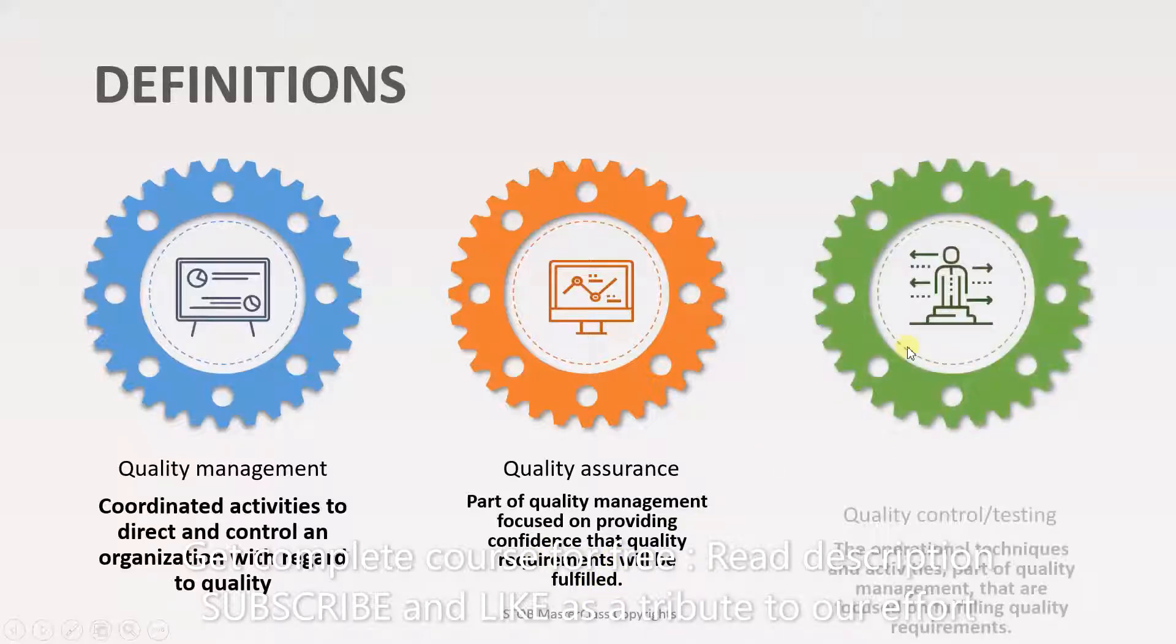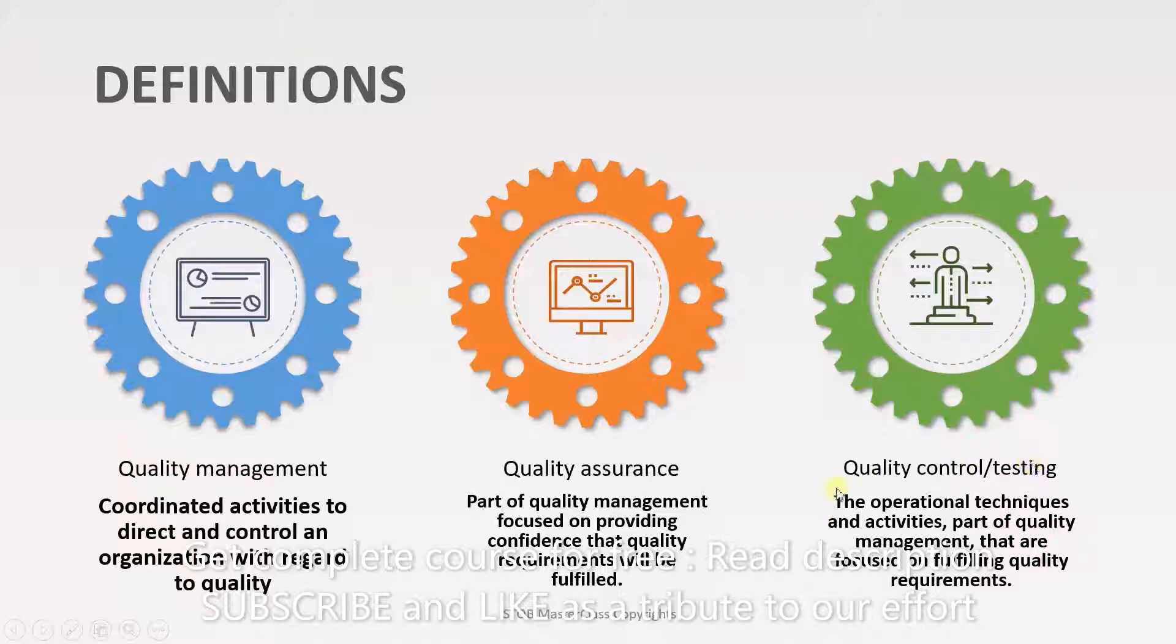The final topic here is quality control or testing. We already have a management and procedure. Now we need to implement these concepts. This implementation is done by using quality control. It is the operational techniques and activities, part of quality management, that are focused on fulfilling quality requirements. Quality management is the largest system which has two parts: quality assurance and quality control. Quality assurance contains all the documents that tell us what procedures to follow, and quality control is all the activities that we have to perform in order to achieve the organization's quality requirements.